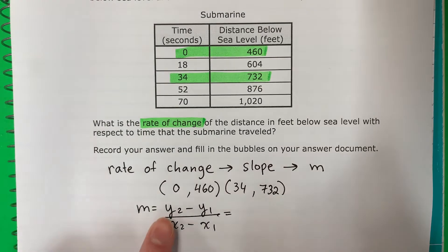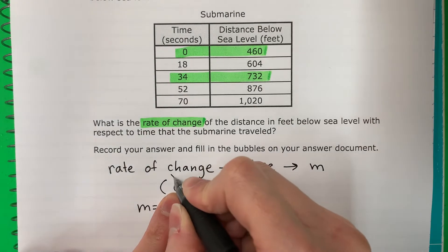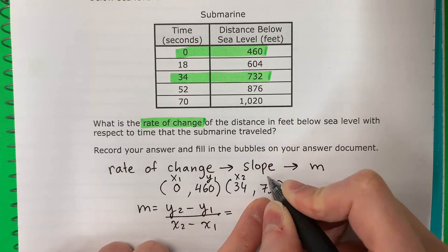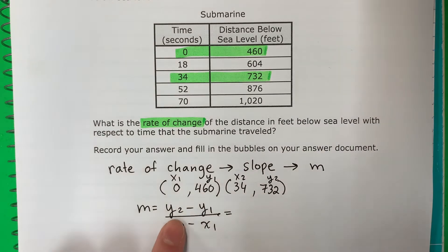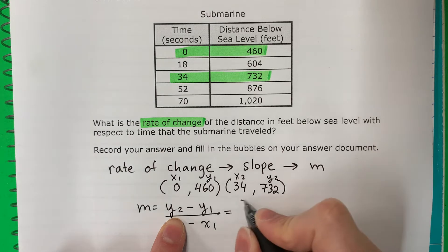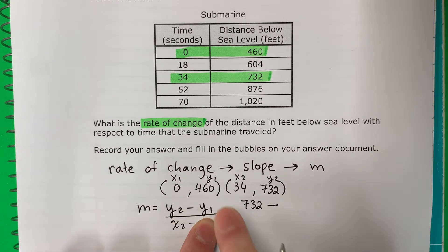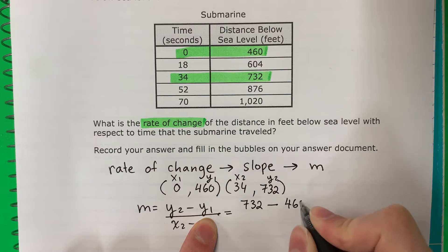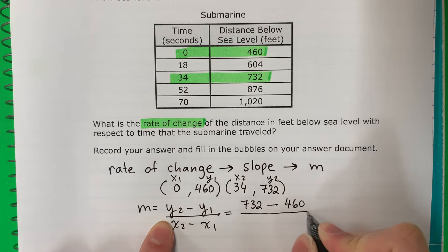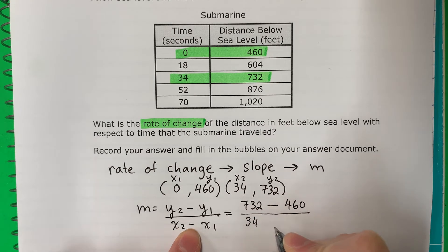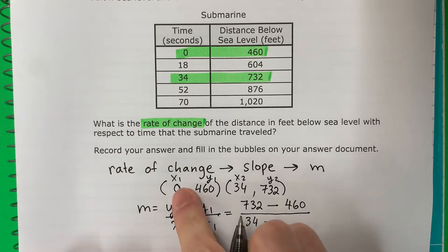Okay, so let's continue. So I need to do X1, Y1, X2, Y2. Y2, 732, minus Y1, 460, divided by, division, X2, 34, minus X1, 0.